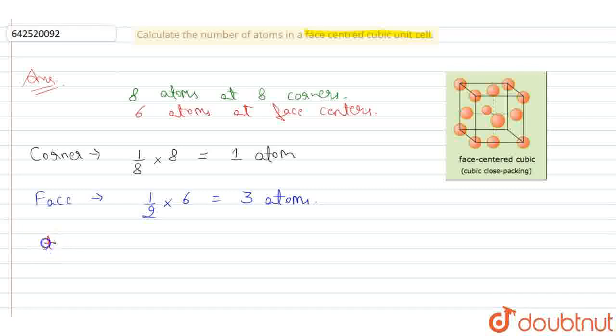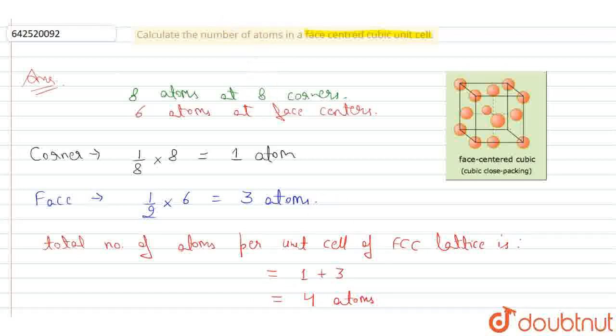Hence, the total number of atoms per unit cell in the FCC lattice is 1 + 3 = 4 atoms. Therefore, the total number of atoms in an FCC unit cell is 4. Thank you.